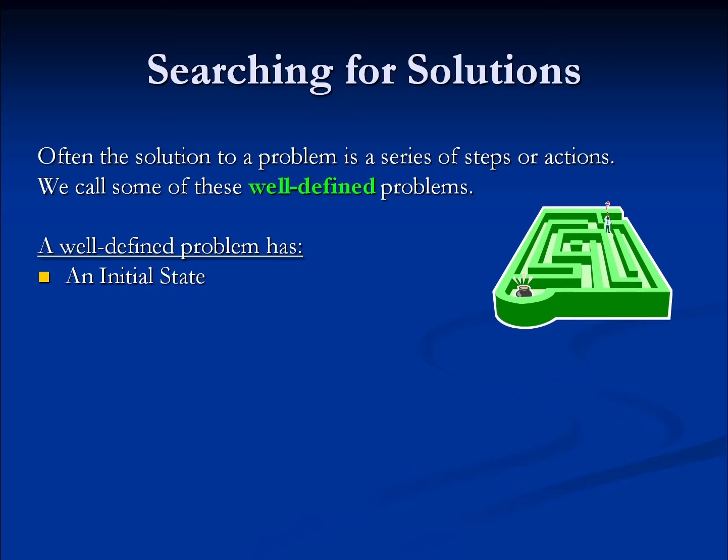For example, in a game of chess, it's the arrangement of the pieces when the game begins. We also need to have a set of one or more goal states — these are the problem states when we have reached the solution to the problem. For chess, the goal states include all checkmate and stalemate board configurations.